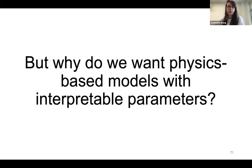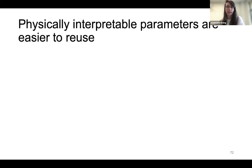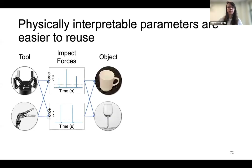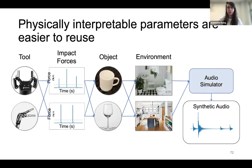Our model, DIFF-IMPACT, brings differentiable rendering to impact sounds. It uses physics-based modeling techniques for sample efficiency and physically interpretable, transferable parameters, yet is fully differentiable to learn from data in the wild. If we can extract physically interpretable parameters about objects, tools, contacts, and environment, we can reuse them to extrapolate and simulate new impact sounds with new combinations of contact conditions, objects, and environments.